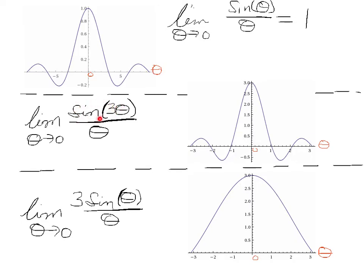This 3 theta affects the frequency of the sine function. This makes the curve oscillate more in the same span of time as just sine theta does, like over here.